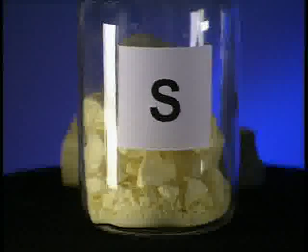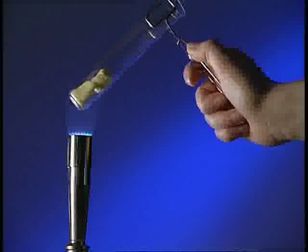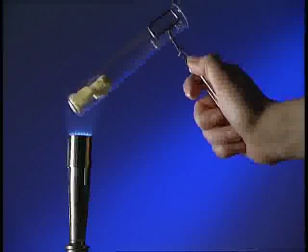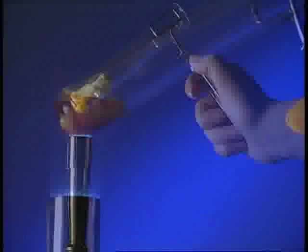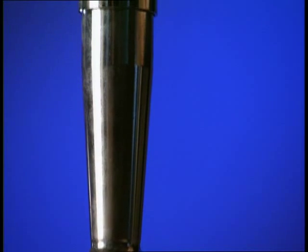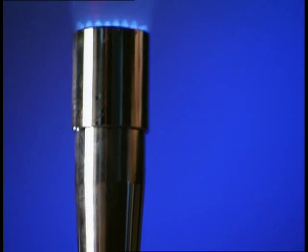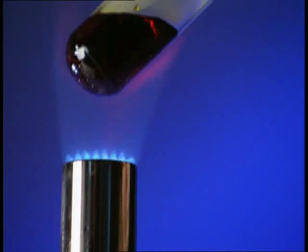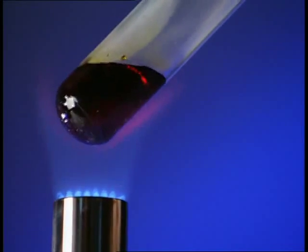This is pure sulphur. It's been extracted from rocks in the Earth's crust. When sulphur is heated over a gentle flame, it melts to form a runny yellow liquid. Heated more strongly, the sulphur darkens and becomes much more viscous.